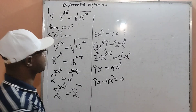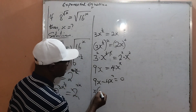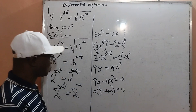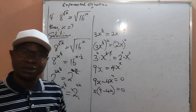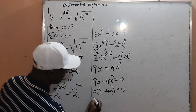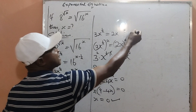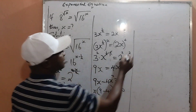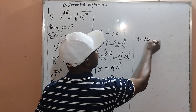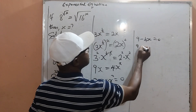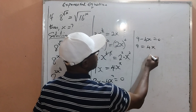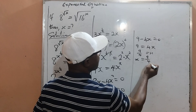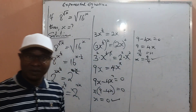You can see that x is common from the left hand side. So if I factor it out, I will get x times 9 minus 4x, all equal to 0. By the zero product rule, x equals 0 is the first value of x. And from the bracket, I get 9 minus 4x equal to 0, meaning 9 equals 4x, so x equals 9 over 4. That is the second value of x.